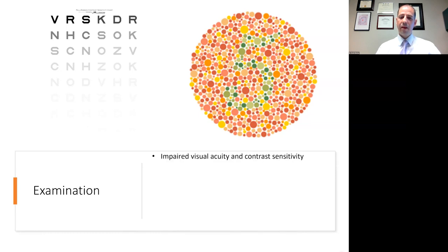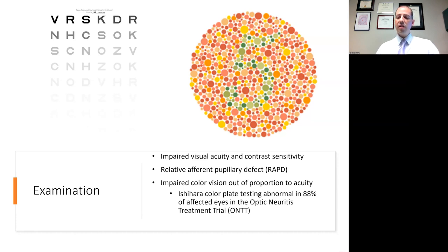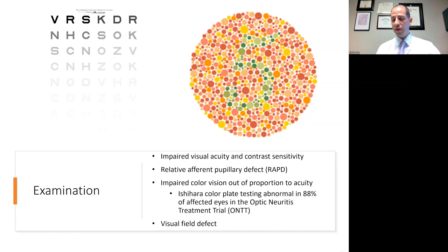What about the examination? It should demonstrate impaired visual acuity and contrast sensitivity — though contrast sensitivity is not often tested in a clinical setting, it has been used as an outcome marker in some trials. A relative afferent pupillary defect must be present if there is asymmetric or unilateral optic neuritis. The impaired color vision is typically out of proportion to the visual acuity impairment — the visual acuity may only be mildly affected whereas color vision can sometimes be profoundly affected. Color plate testing was abnormal in about 88% of patients in the optic neuritis treatment trial, though fairly normal color vision would not rule out the diagnosis. A visual field defect is also associated.